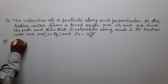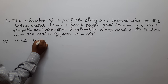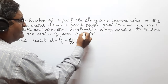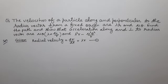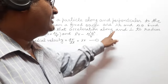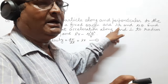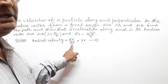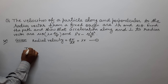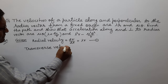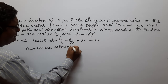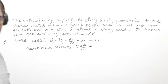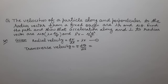The radial velocity is dr/dt, and this is given as λr — this is the first equation. The transverse velocity is r·dθ/dt, and this is given as μθ — this is the second equation.